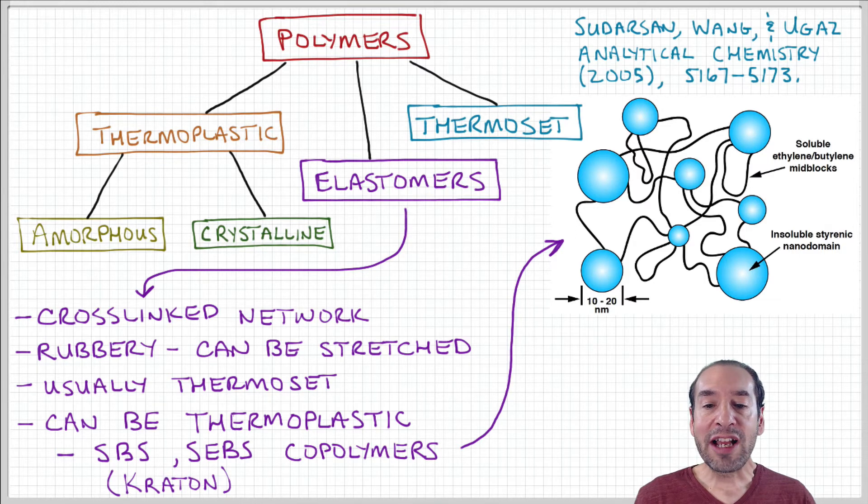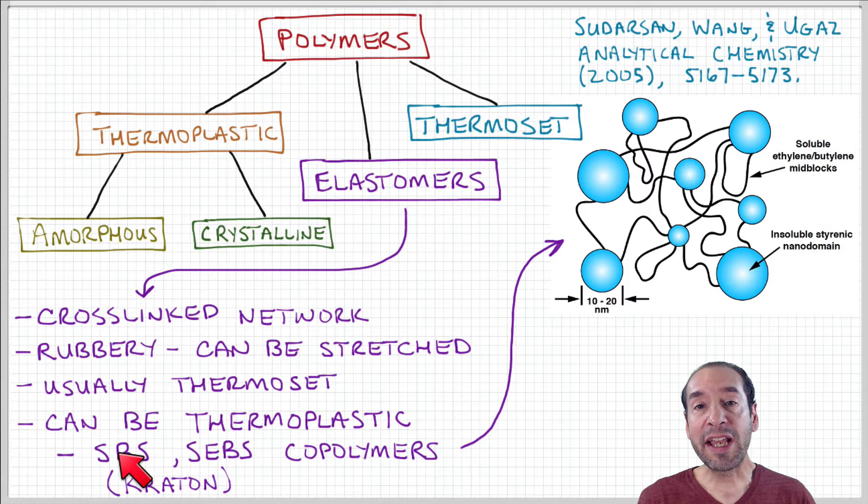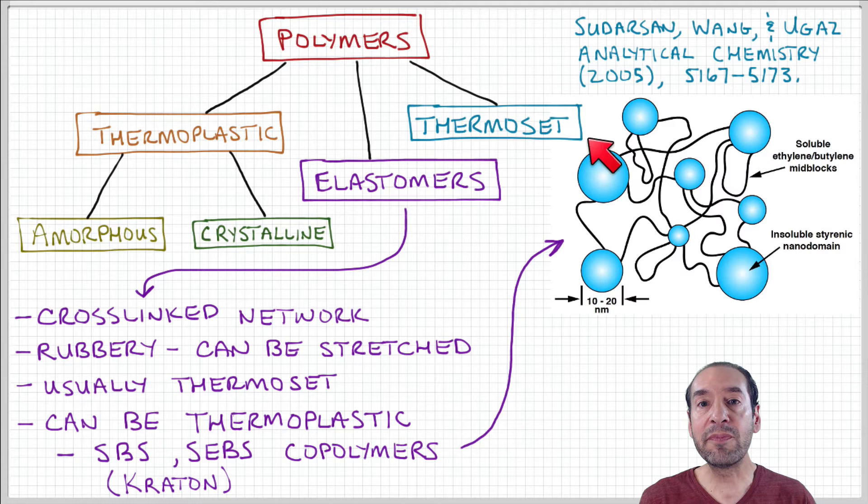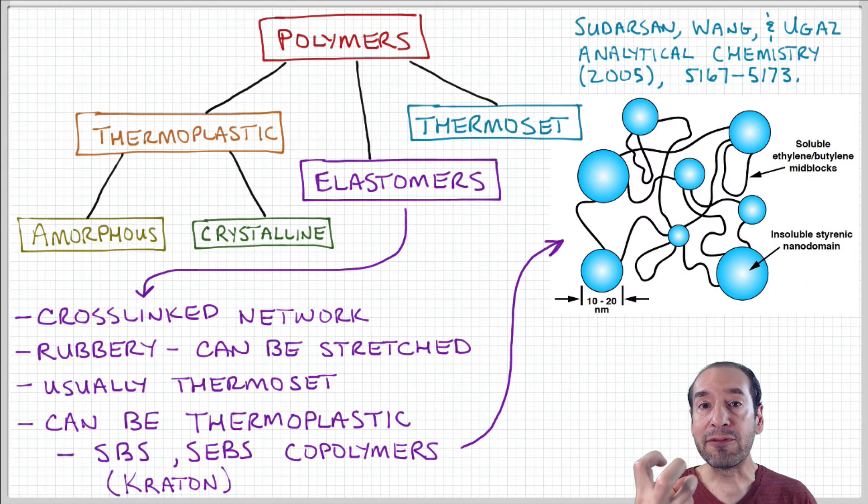And you might wonder how can this be melted if it has a network? Well the idea is that it forms a network when it's solid but it's not a permanent network. So these are copolymers and remember we talked about copolymers. We said that these different monomer domains can have different properties. So in this case these styrene blocks are insoluble. They don't want to mix with the surroundings and then the ethylene butylene mid blocks are soluble. And these are in a matrix like an oil-based matrix.